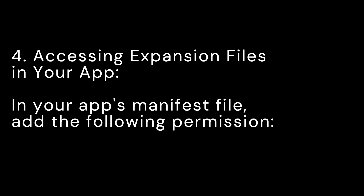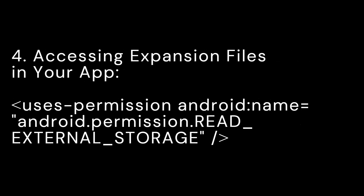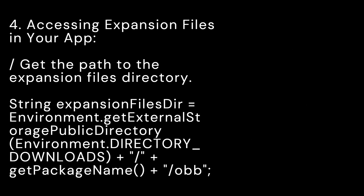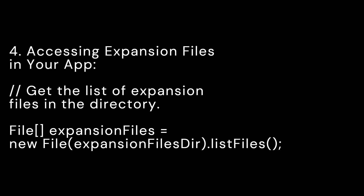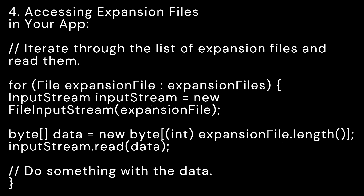4. Accessing Expansion Files in Your App. To access expansion files in your app, you will need to follow these steps. In your app's manifest file, add the required permission. Then get the path to the Expansion Files directory using the provided code. Next, get the list of expansion files in the directory, iterate through the list of expansion files and read them. Once you have read the data, you can do anything you want to achieve with it. You can get all this code from the link in the description below.